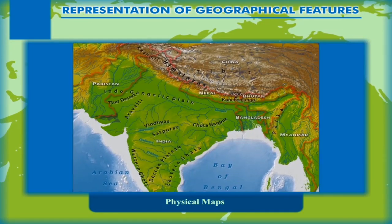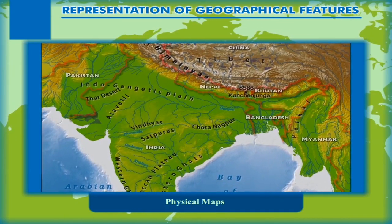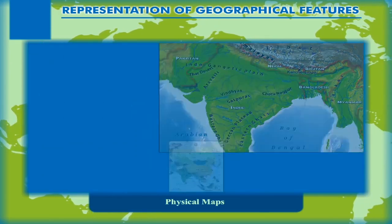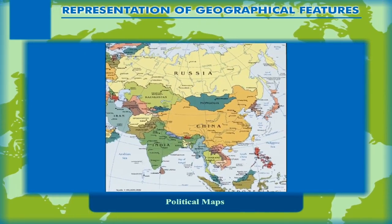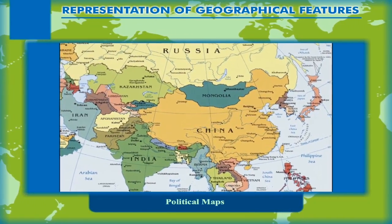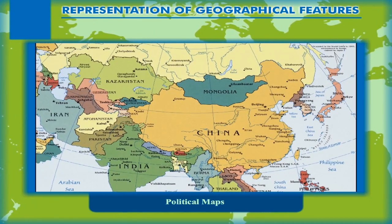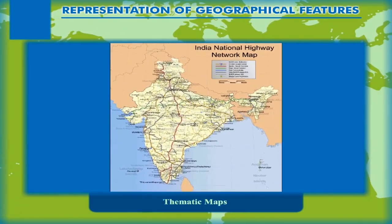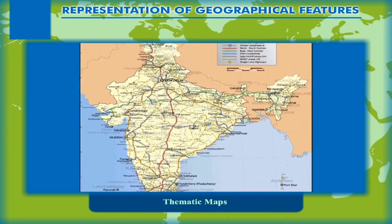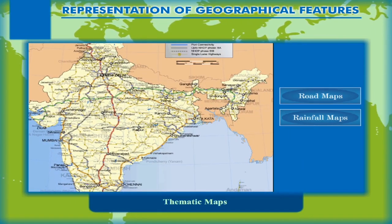Physical maps show the natural features of the earth like mountains, plains, plateaus, water bodies, etc. Political maps show the political divisions of the earth — countries, states, and cities are marked along with their boundaries. Thematic maps, as the name suggests, have a specific theme or subject; they may be road maps, rainfall maps, or vegetation maps.